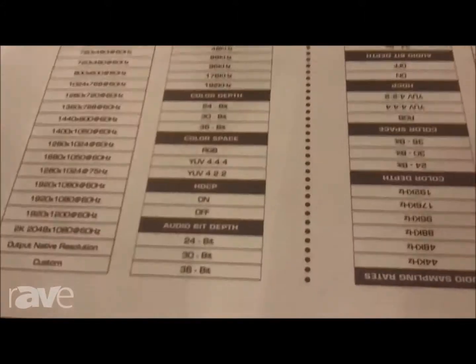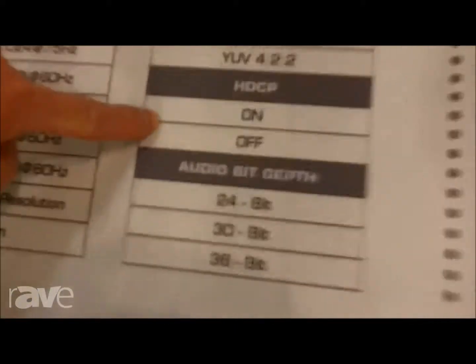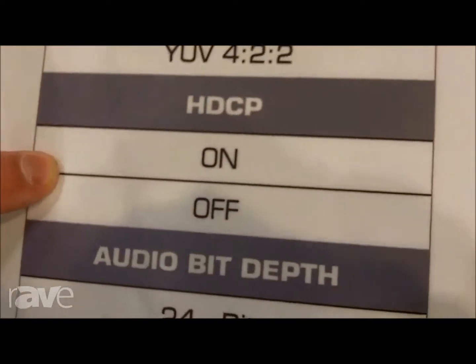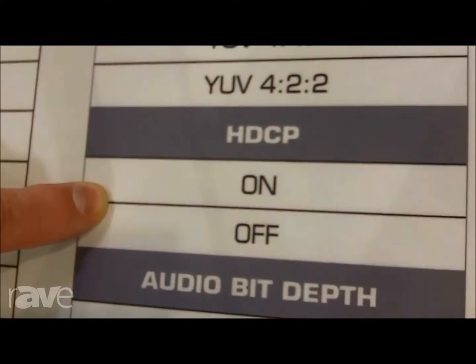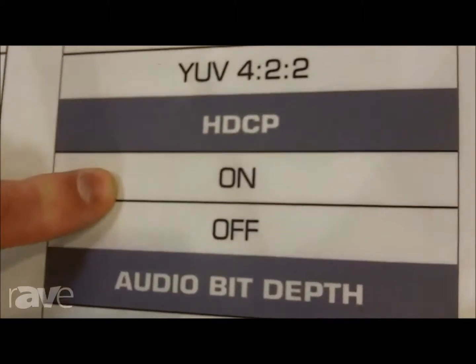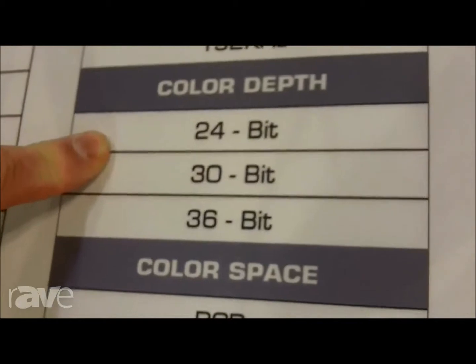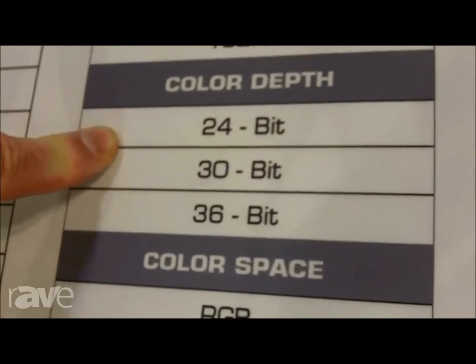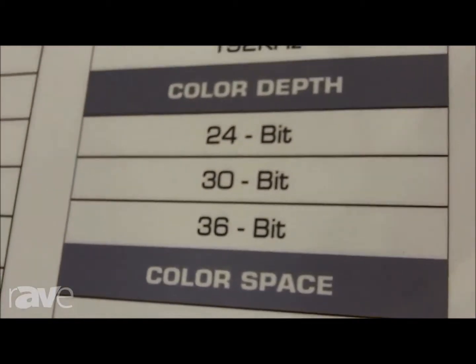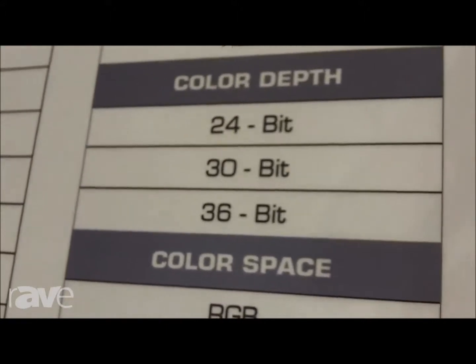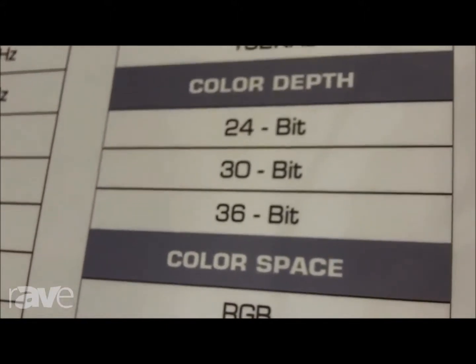Some of the key features of this device that make it so valuable is that you can turn HDCP on and off. When you're testing a system to find out why it may not be working and it's an HDCP issue, this can be invaluable. You can also change your color depth and choose what output color depth you want, because if you're having a deep color problem in your system, you might be able to identify that easily with the 840 HXL as well.